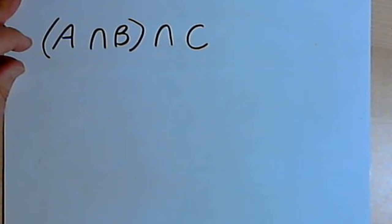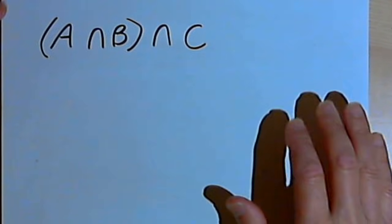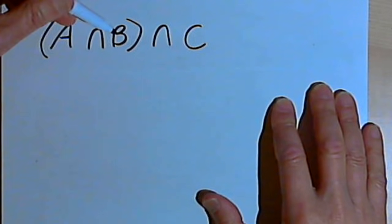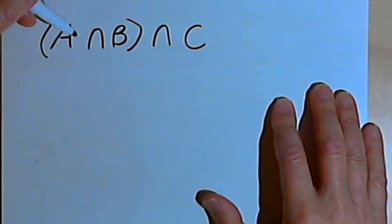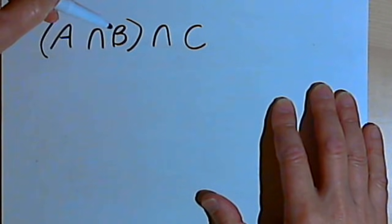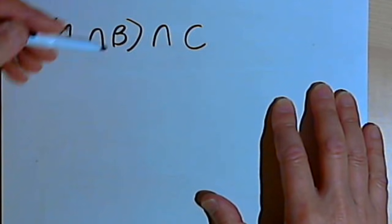Here's the first example. I've got the intersection of sets A and B, and after I find that intersection, I want to find the intersection of that with set C.